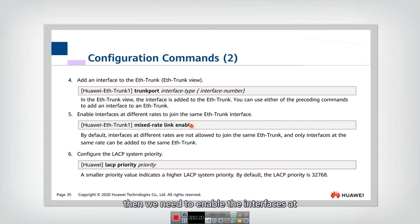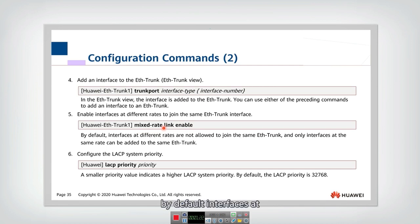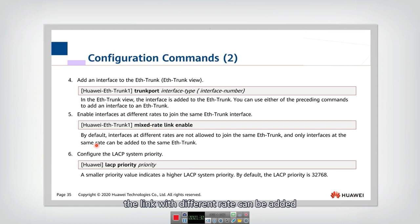Then we need to enable interfaces at different rates to join the same ether trunk interface. To do this we use the mixed rate link enable command. By default, interfaces at different rates are not allowed to join the same ether trunk — only by using this command can links with different rates be added. Finally, we can configure the LACP system priority.